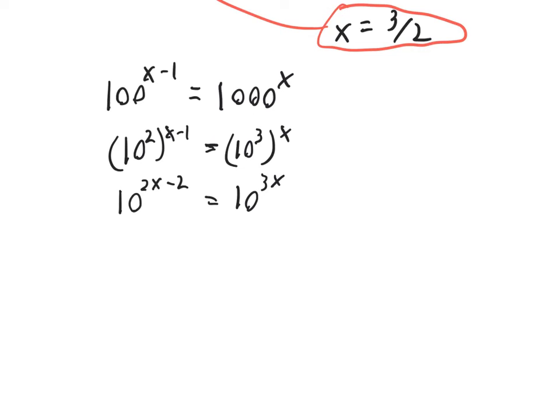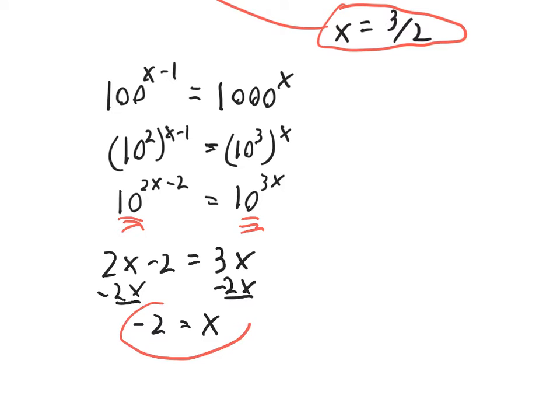Now bases are equal, so the exponents should be equal. 2x minus 2 will have to be equal to 3x, setting the exponents equal. And now just solve this for x. The easiest thing to do here is subtract the 2x from both sides. We get negative 2 is equal to x. And that's our answer.